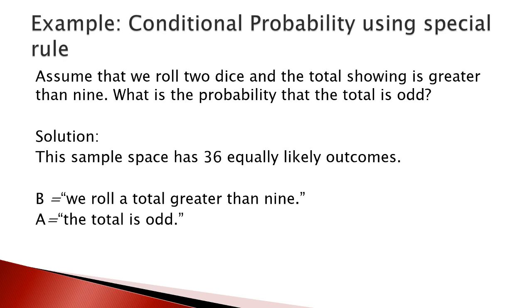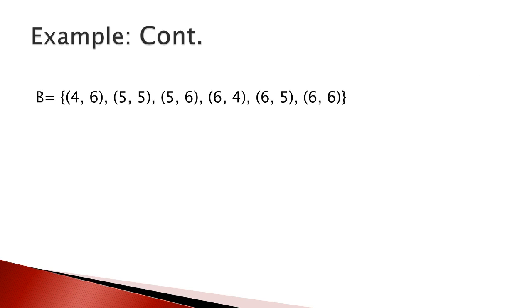And let A be the event that the total is odd. We can write the elements in B: (4,6), (5,5), (5,6), (6,4), (6,5), and (6,6). There are six elements in B.